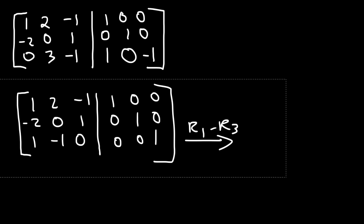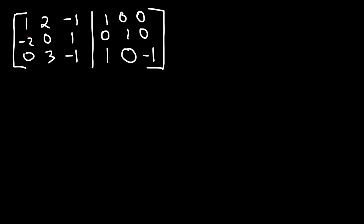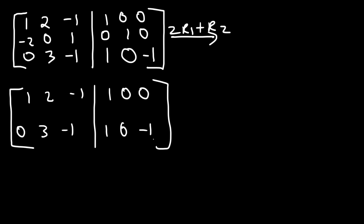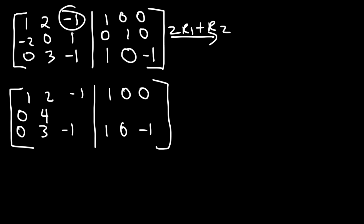Now, how can we turn this negative 2 into a 0? What row operations do we need to apply to row 2? We're going to say 2 times R1 plus R2. So we're changing row 2. Row 1 is going to stay the same. Row 3 will remain the same as well. So 2 times 1 plus negative 2 is 0. 2 times 2 plus 0 is 4. 2 times negative 1, which is negative 2, plus 1 is negative 1. 2 times 1 plus 0 is 2. 2 times 0 plus 1 is 1. 2 times 0 plus 0 is 0.